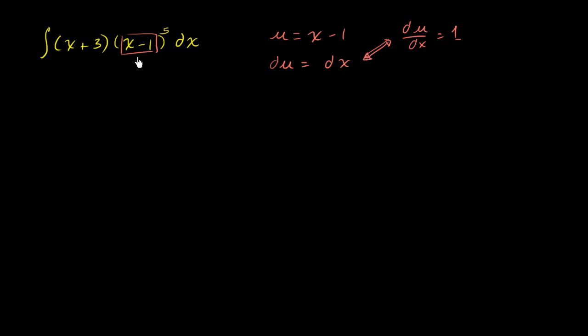And so if we did that, how could we rewrite this entire expression? Well, it would be equal to the integral of, well, we have x + 3 right over here. This is neither just u nor is it du. So let's think about what we could do here. Well, we could say if u is equal to x - 1, we could add 1 to both sides of this equation. And we could say u + 1 is equal to x. And so for x, we can substitute that with u + 1. So let's do that. So we're kind of back substituting in for x.